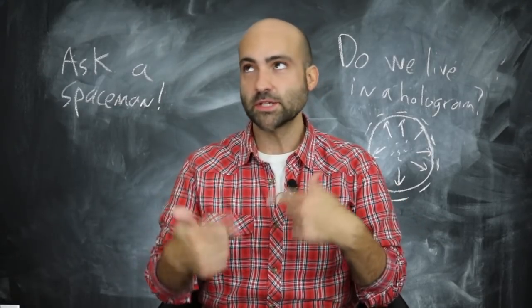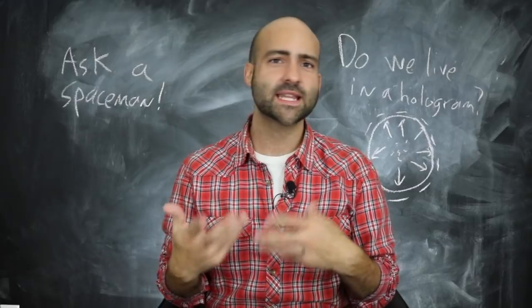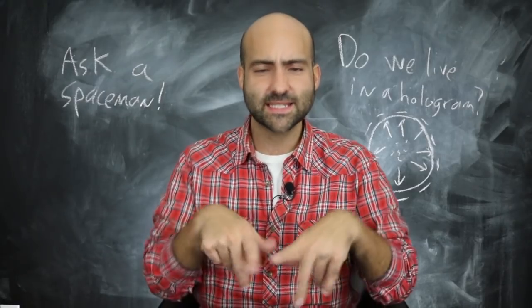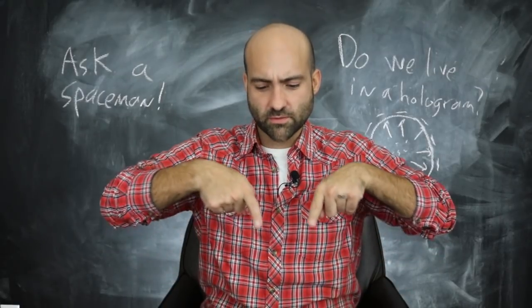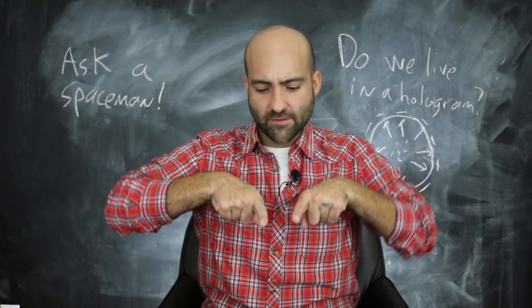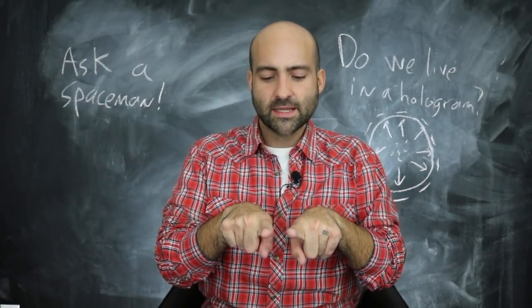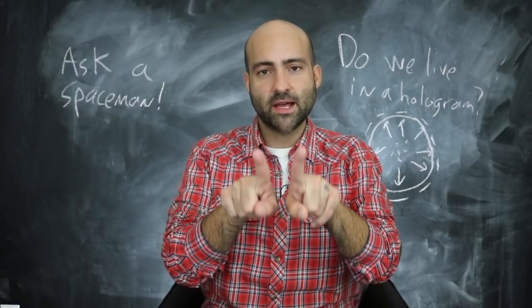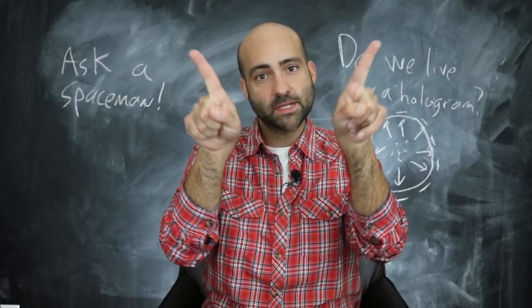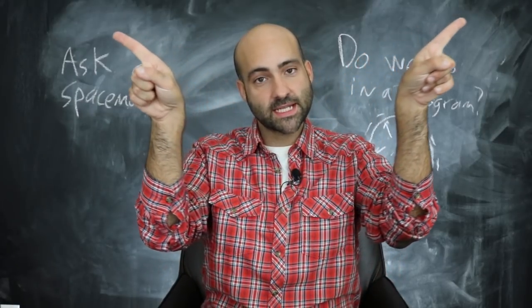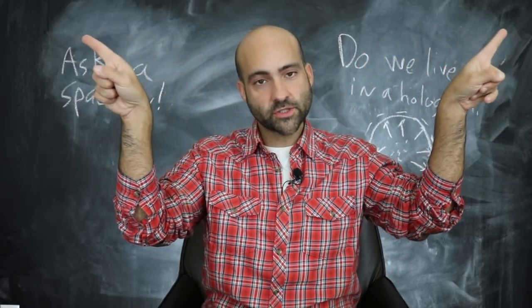Negative spatial curvature — that's like the saddle-shaped universe where you can have two parallel lines that start out parallel and they'll end up diverging. That's negative spatial curvature.